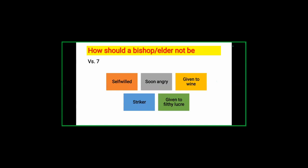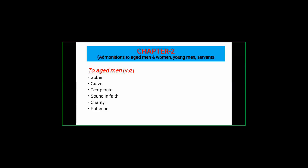A bishop is not supposed to be self-willed — selfish. They should not get angry too quickly, and must not be given to wine. God says touch not, taste not — this refers to anything that harms the body. They should not be a striker, and should not pursue filthy lucre — gaining money through illegal or improper means. These are the qualities that should not be present in a bishop. These are the instructions given to Titus for selecting elders in Crete.